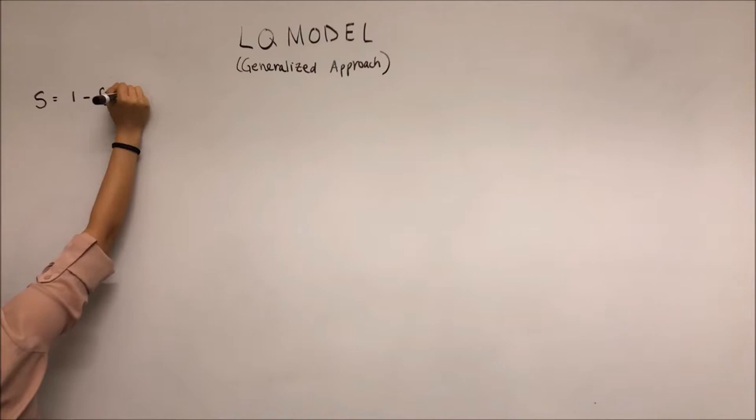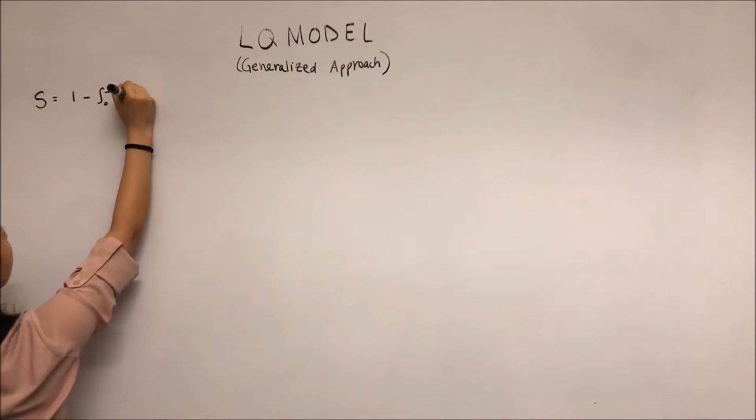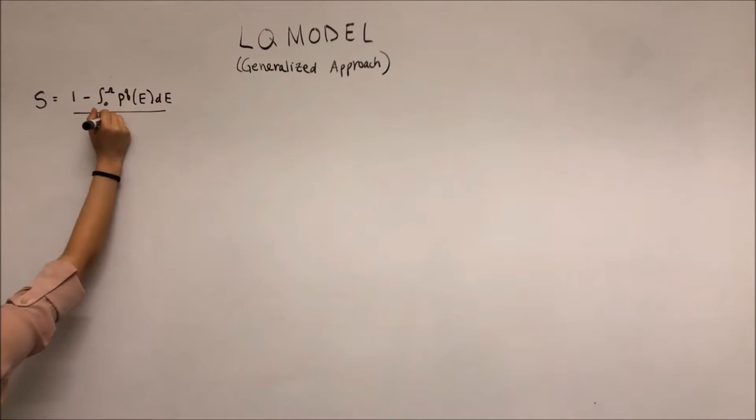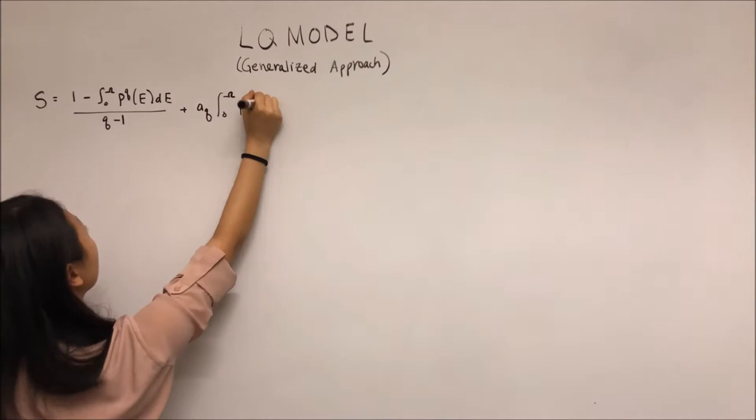This entropy holds in the limit when Q approaches 1, at which point a system is considered fully extensive, something very familiar. Notice in the integral that the upper bound is replaced by a finite tissue effect omega, at which point all cells are killed.